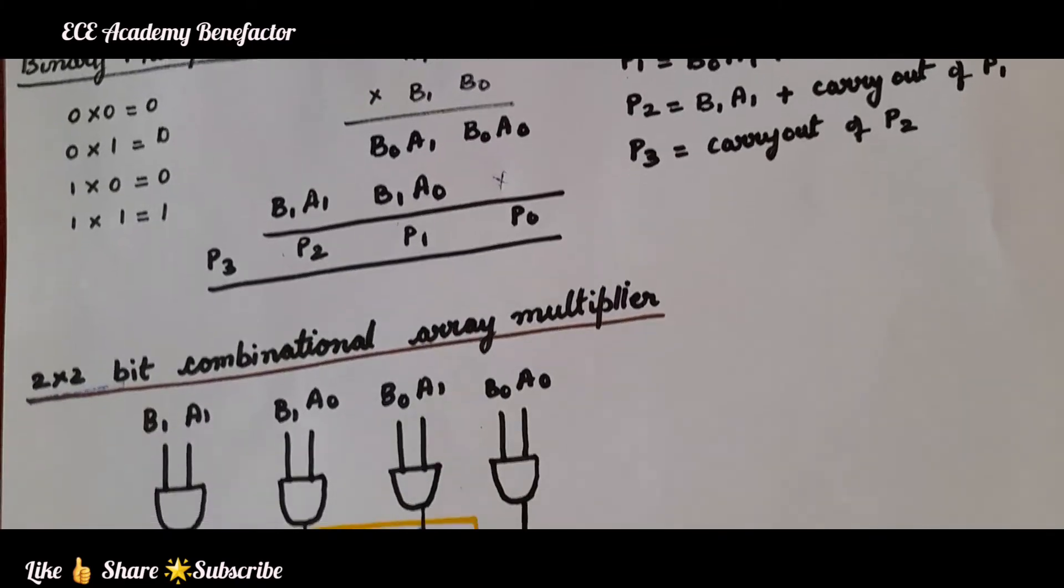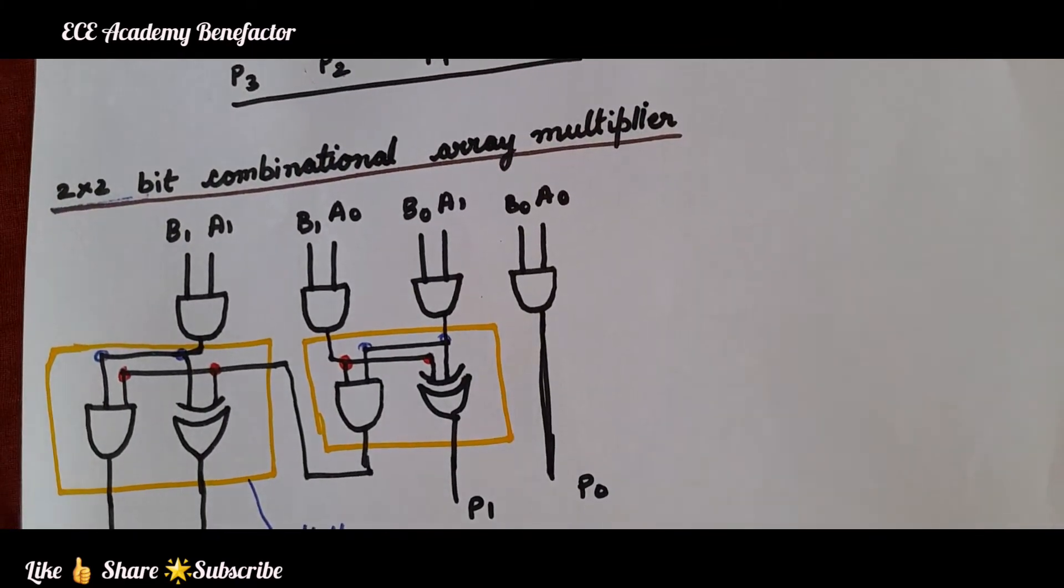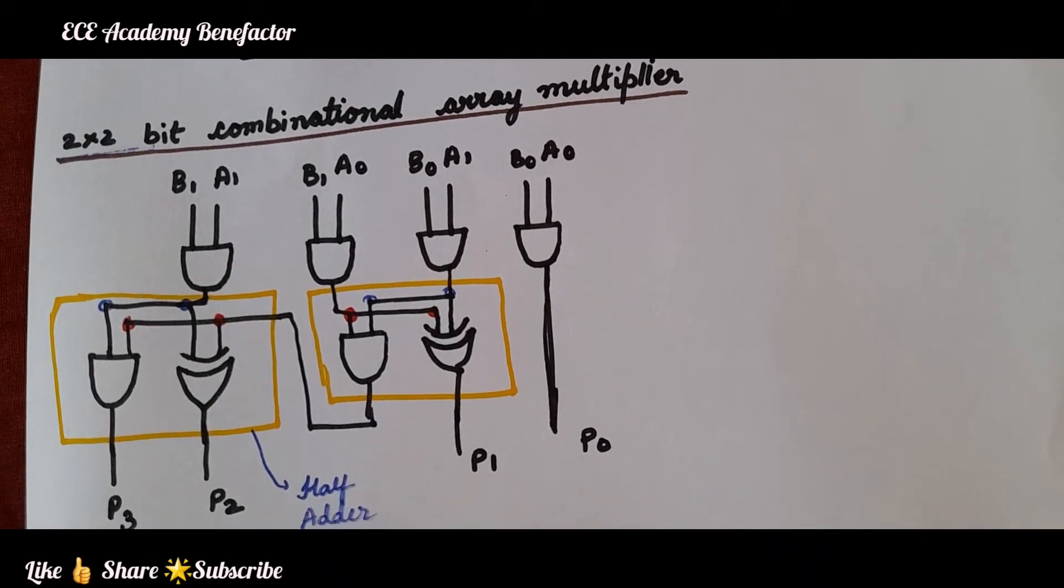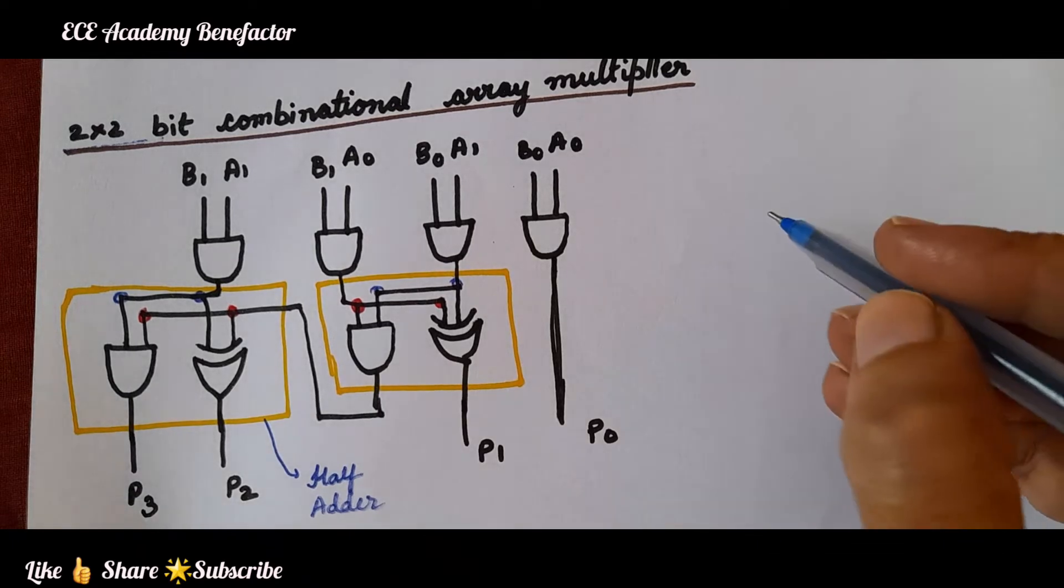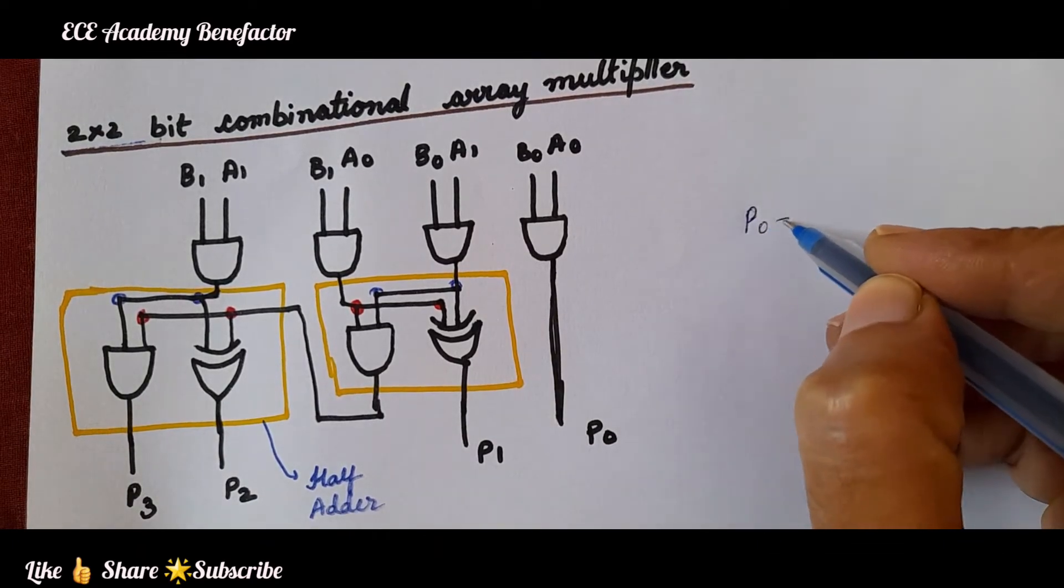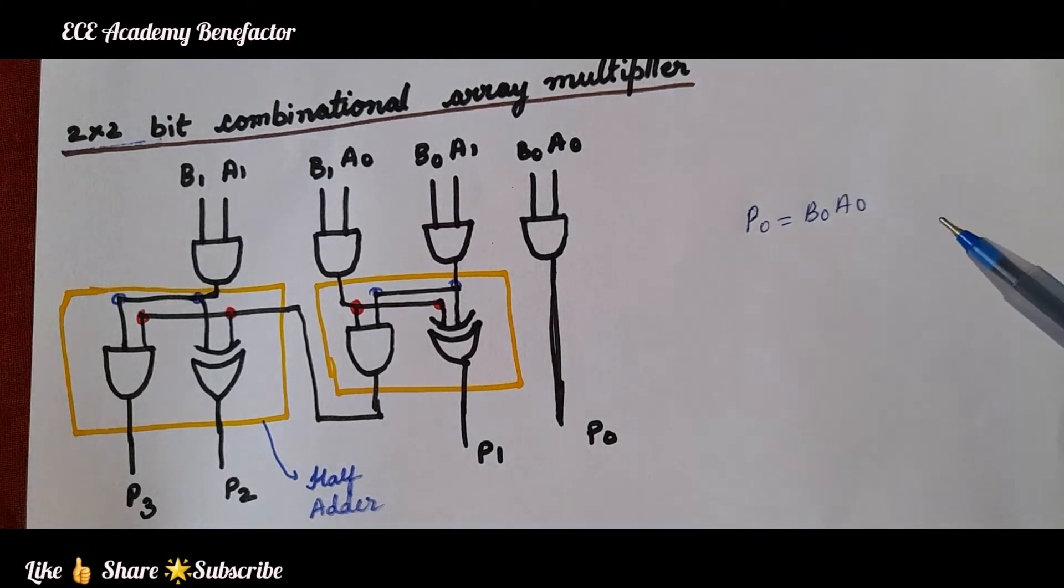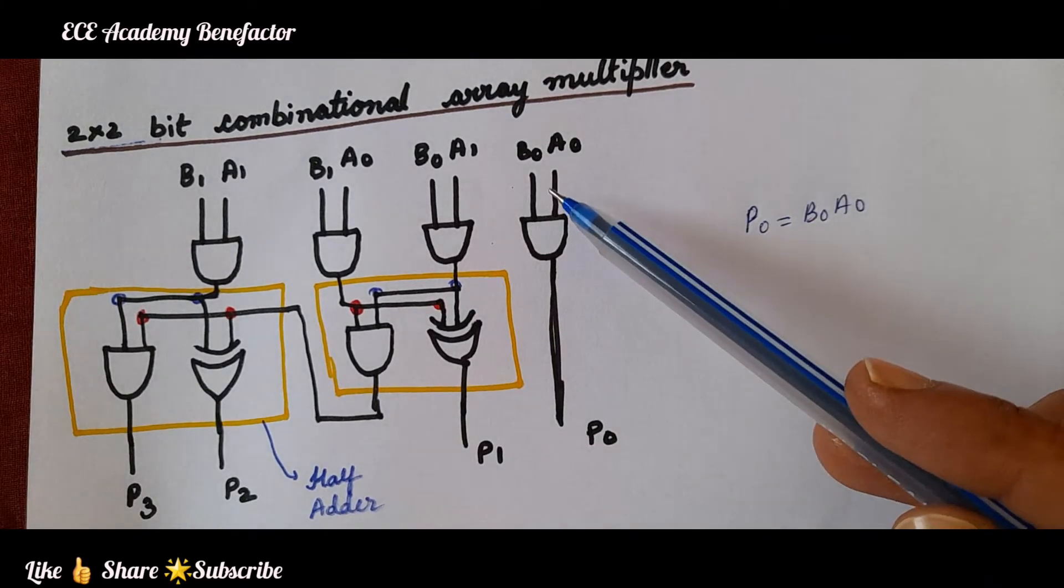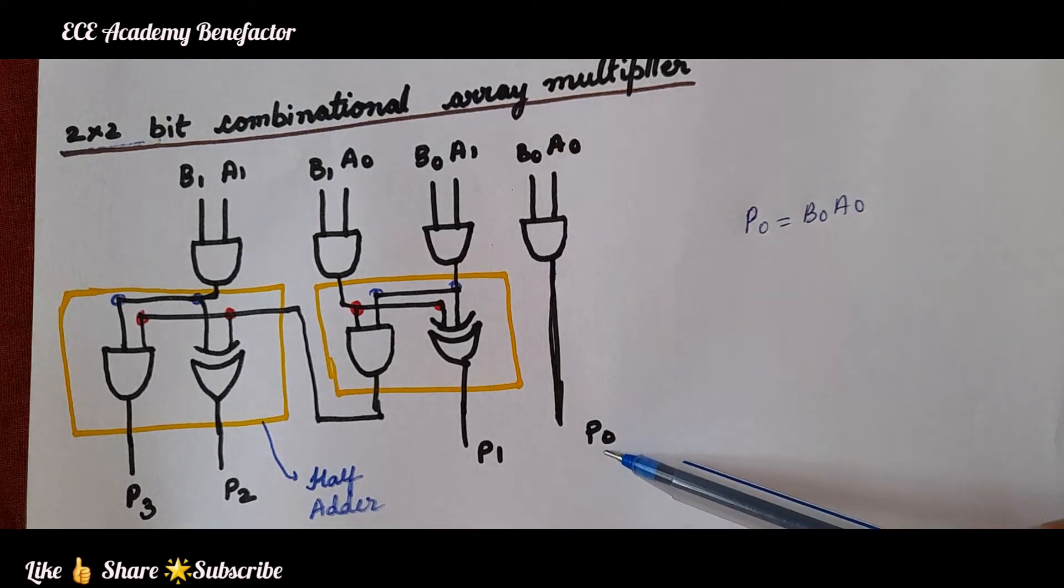Let us see how to draw the 2 cross 2 bit combinational array multiplier. p0 is b0a0, so we need an AND gate. We are giving a0, b0 to AND gate to get p0.